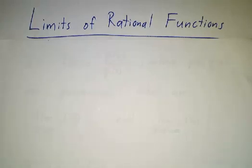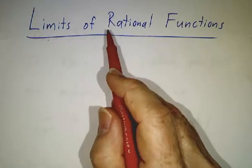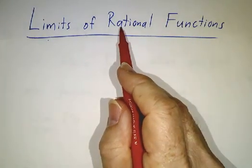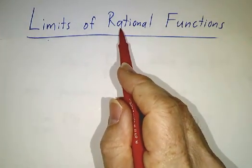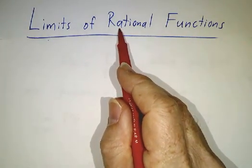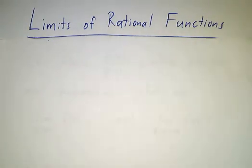In the last video, we talked about horizontal asymptotes and what they had to do with limits of a function as x goes to infinity or to minus infinity. In this video, we're going to look at rational functions and see what their limits are as x goes to infinity or minus infinity.